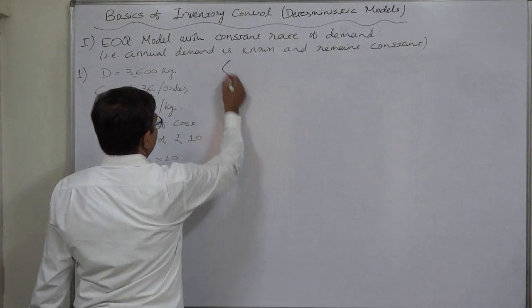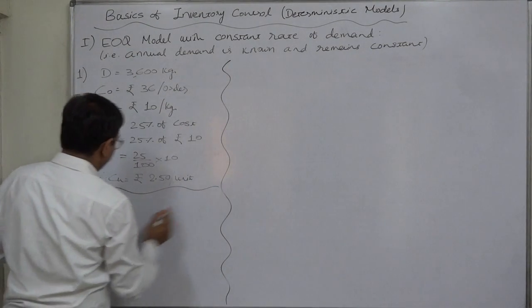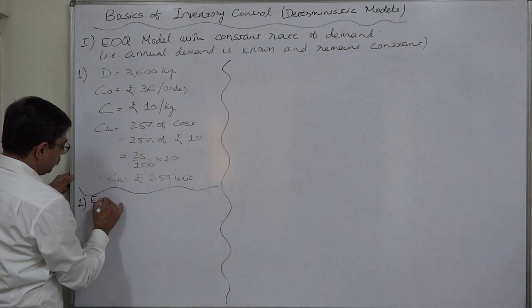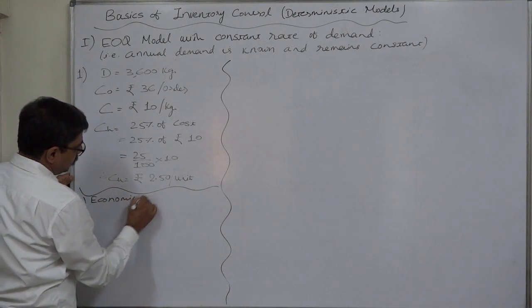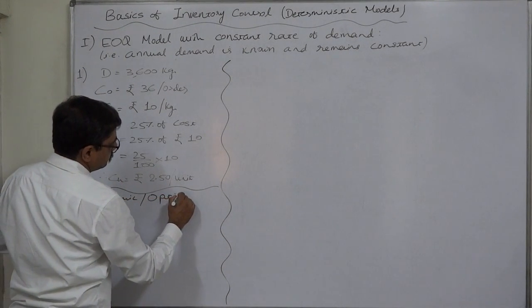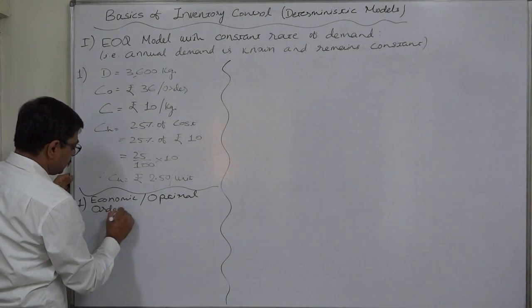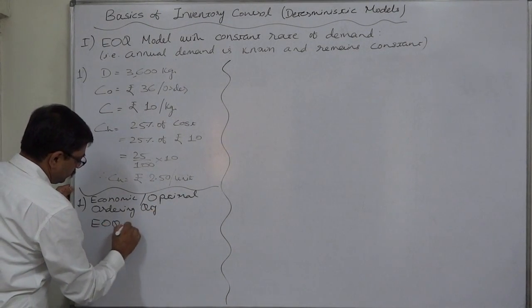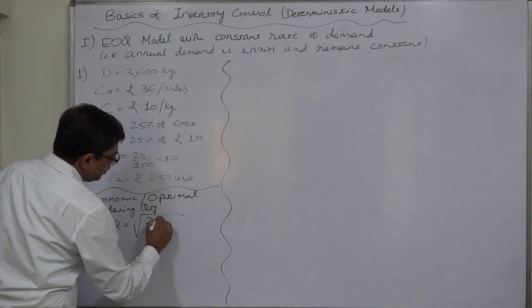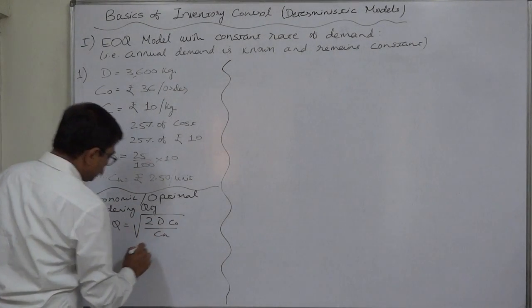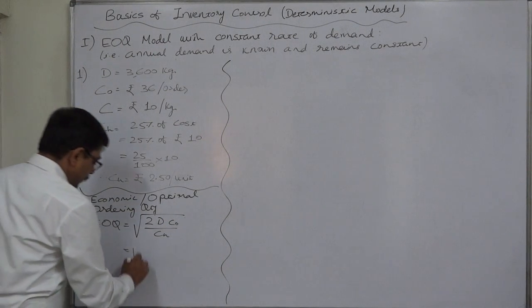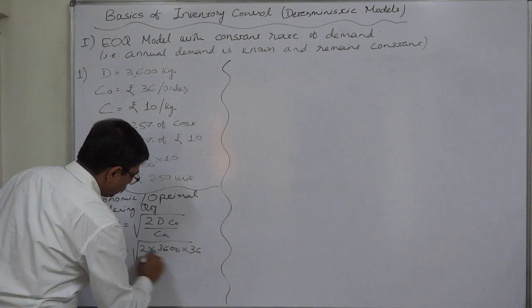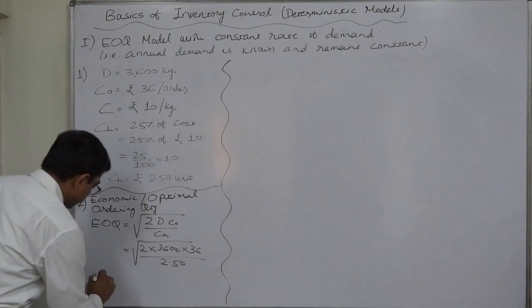So, let us first calculate EOQ. Optimum or economic order quantity. Economic or optimal ordering quantity. That is EOQ. 2D into CO divided by CH whole square root. Now, under root 2 into 3600 into 36 divided by 2.5. Therefore,